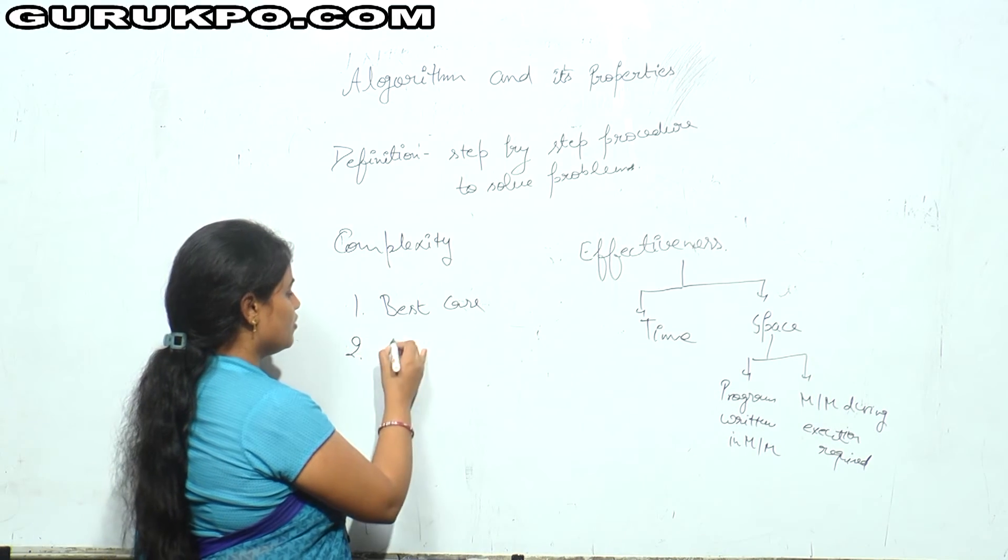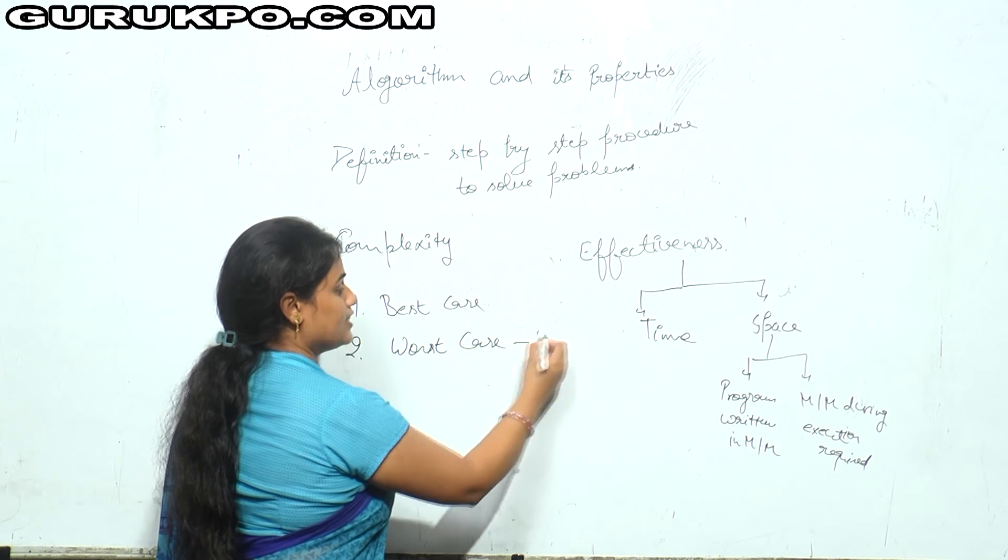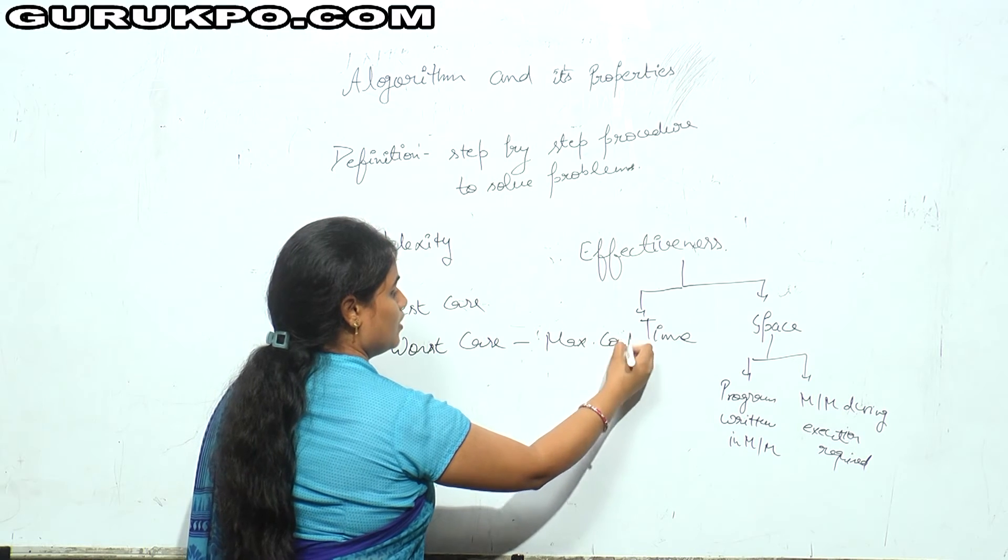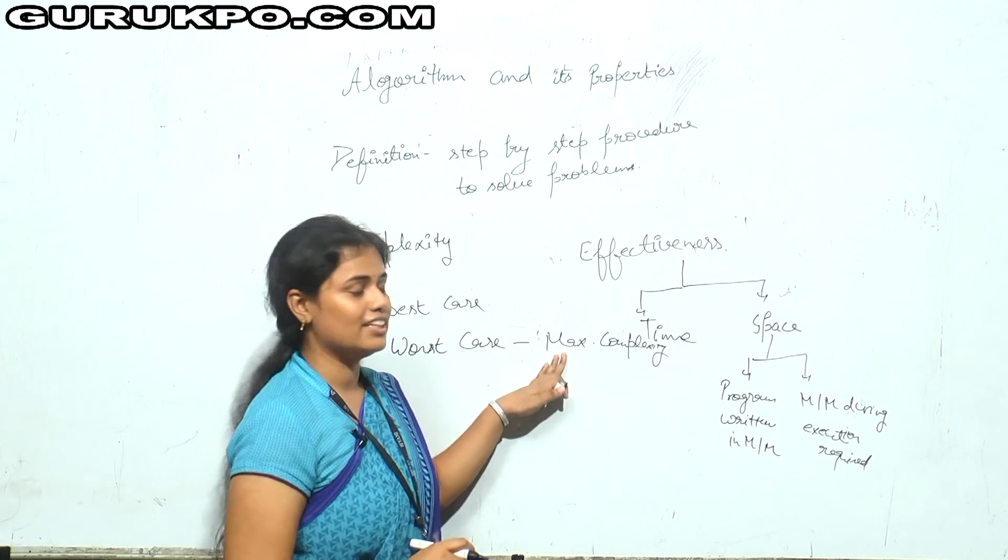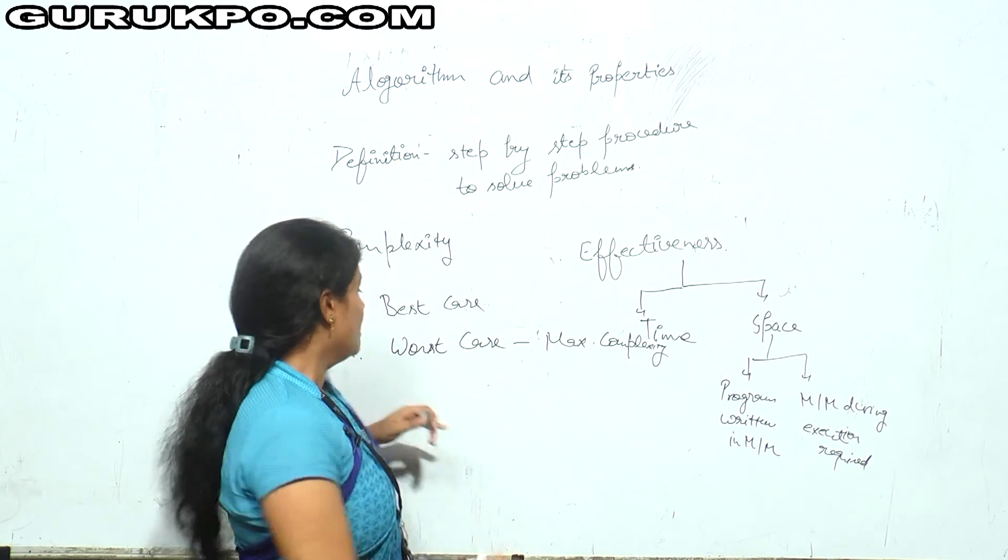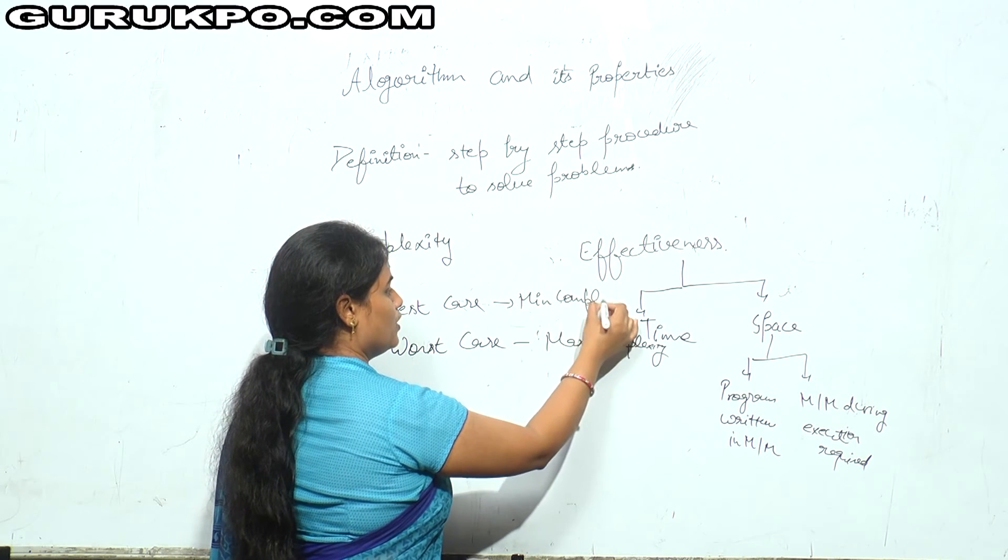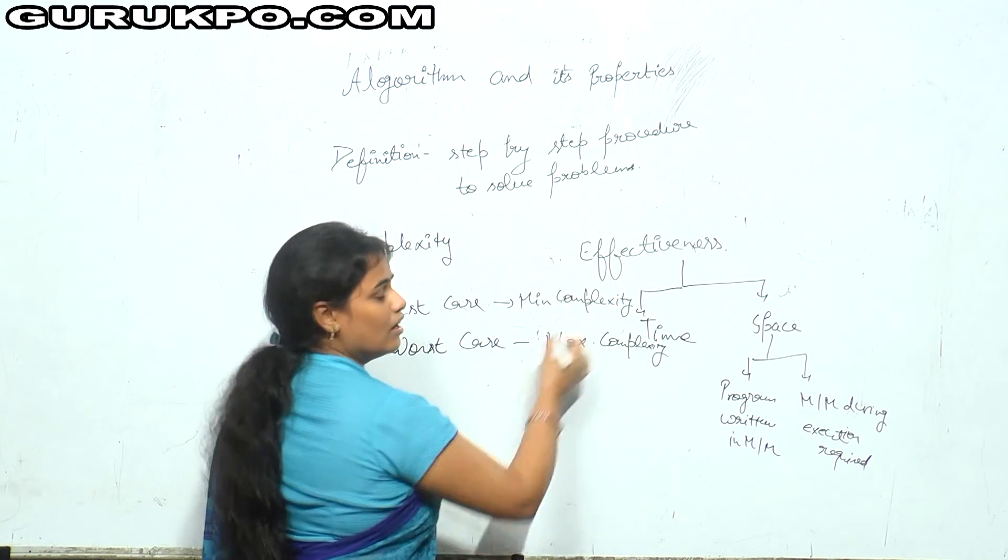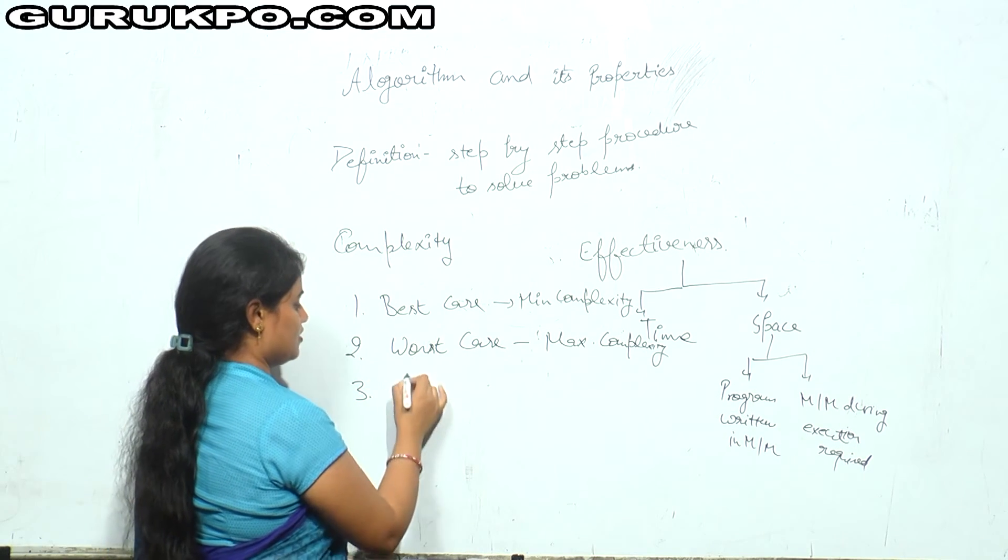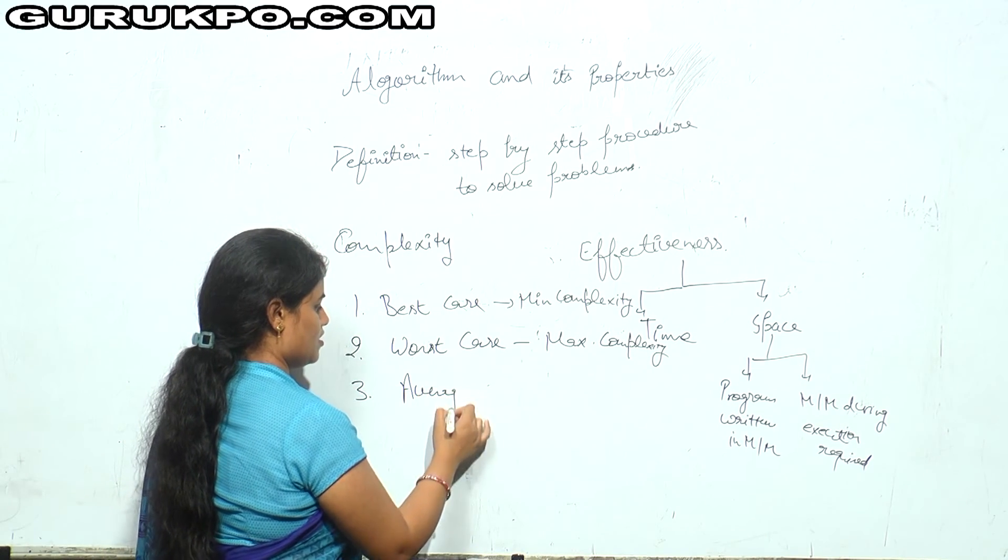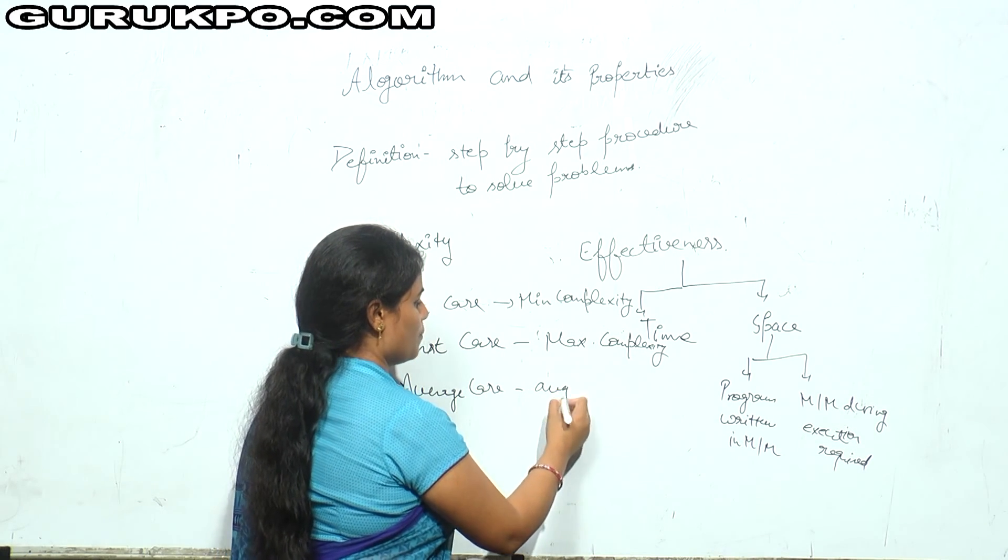Second is worst case. Worst case is the maximum complexity - for any input complexity cannot be higher than this, worst case complexity. And best case is the minimum complexity. For any input complexity cannot be less than this. And third is average case. Average case is basically the average complexity.